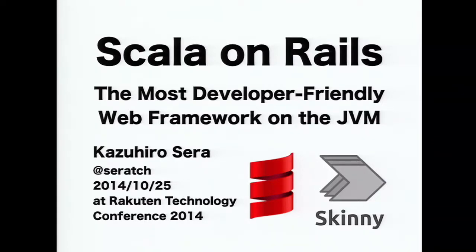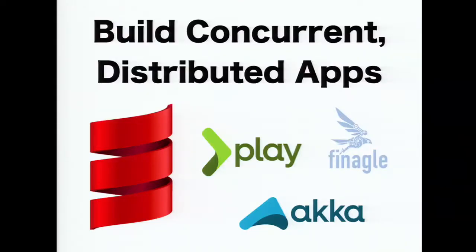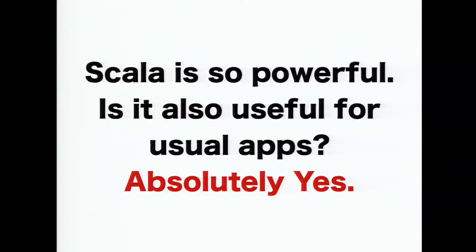I'd like to talk about my Scala framework. I heard Rakuten people use Java officially, so I believe Rakuten people are very interested in Scala too. The key concept of Scala is mixing object-oriented programming and functional programming. Sometimes people say it's a hybrid language. Scala has lots of features, and it's especially very suitable for building concurrent and distributed applications.